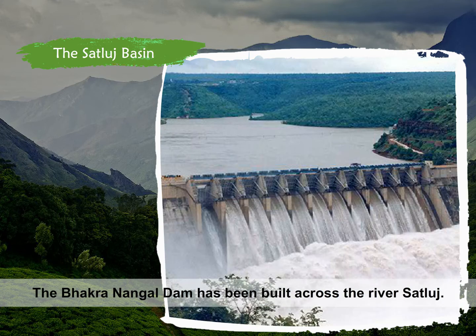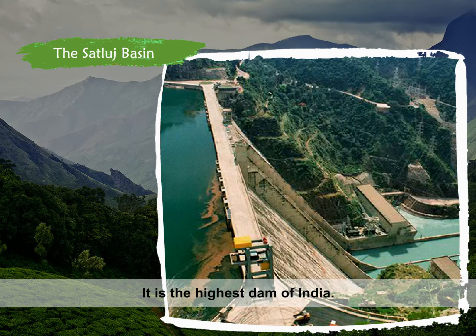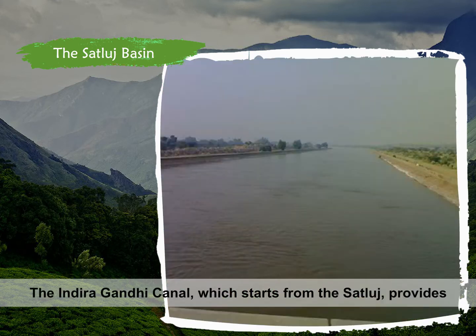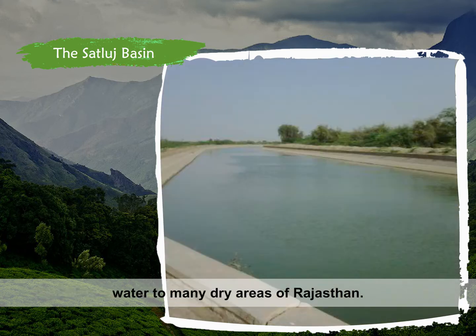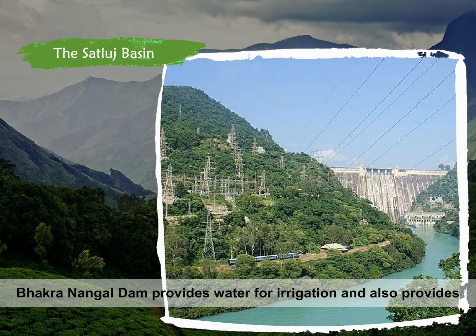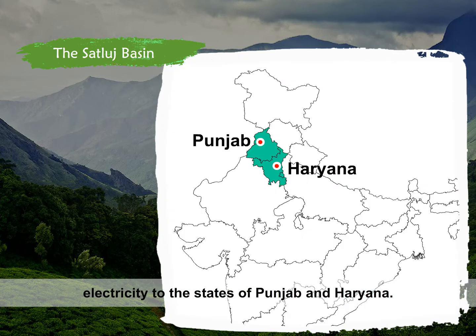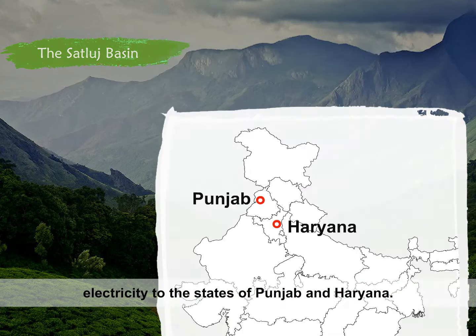The Bhakra Nangal Dam has been built across the river Satlaj. It is the highest dam of India. The Indira Gandhi Canal, which starts from the Satlaj, provides water to many dry areas of Rajasthan. Bhakra Nangal Dam provides water for irrigation and also provides electricity to the states of Punjab and Haryana.